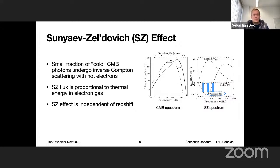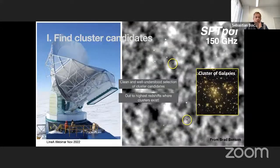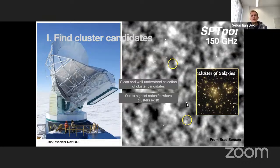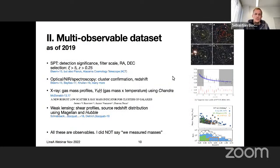The spectral distortion produces a characteristic decrement below 220 GHz and an increment beyond, highlighted by SPT's three frequency bands. The SZ flux is proportional to the thermal energy in the cluster electrons, and importantly this effect is essentially independent of redshift. This means with a good millimeter-wave telescope we can detect galaxy clusters out to the highest redshifts where clusters exist. In a roughly 50 square-degree SPT survey cutout, you can see primary CMB anisotropies, point sources, and the black shadows — the SZ decrements — which are our cluster candidates.